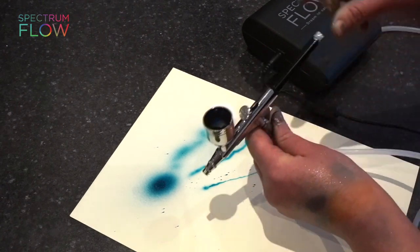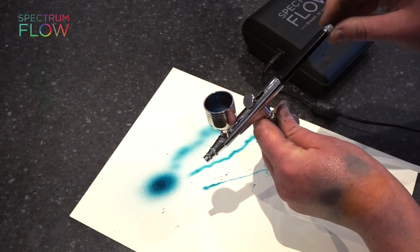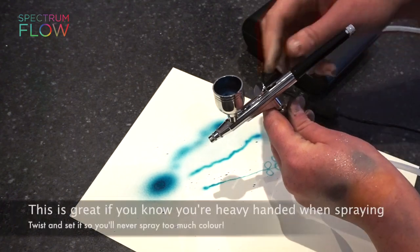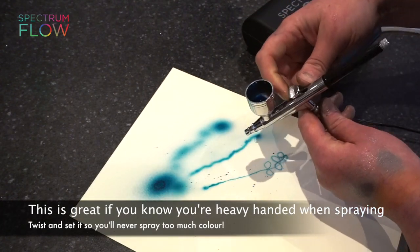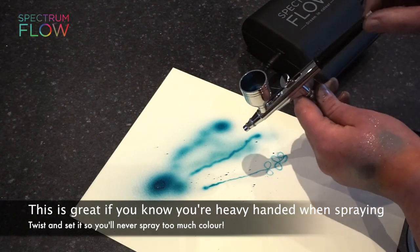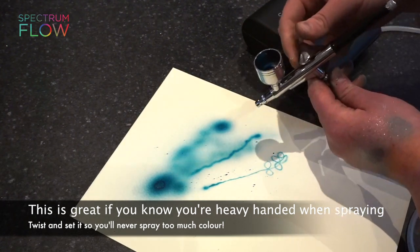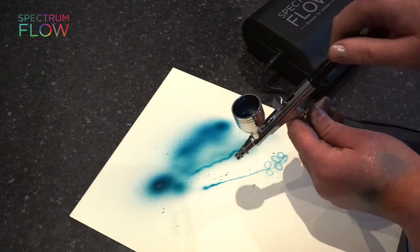Also on these pens, you have this little thing here that you can change to shorten or lengthen it. So it can stop you from pulling the airbrush lever too far back. You can set it so it never goes further than that as you're pulling it, or take it further back so more color can come out.